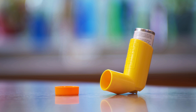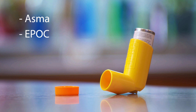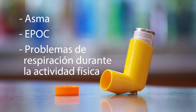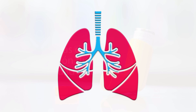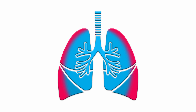El albuterol se puede usar para una variedad de condiciones respiratorias como asma y enfermedad pulmonar obstructiva crónica, también conocida como EPOC. También puede ayudar a mejorar los problemas de respiración durante el ejercicio. El albuterol ayuda a relajar y abrir las vías respiratorias a sus pulmones para que le resulte más fácil respirar.